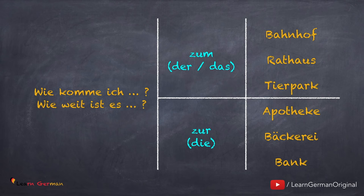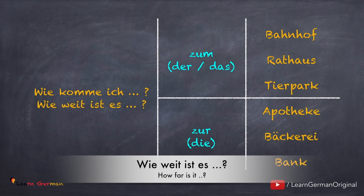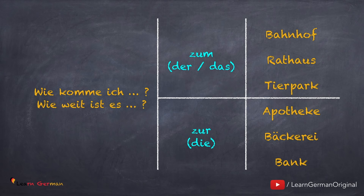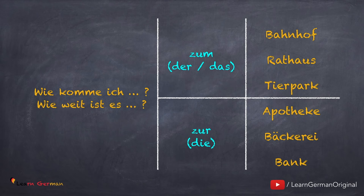You can ask 'Wie komme ich' or 'Wie weit ist das' — followed by 'zum' or 'zur'. The use of the preposition depends on the article of the place. With places that have the article 'der' or 'das', you say 'zum': for example, 'Wie komme ich zum Bahnhof?', 'zum Rathaus', or 'zum Tierpark'. With places that have the article 'die', you say 'zur': for example, 'Wie komme ich zur Apotheke?', 'zur Bäckerei', or 'zur Bank'. A list of places you generally find in a city is in our video 'In der Stadt' — the link is given below.